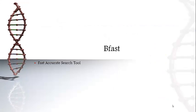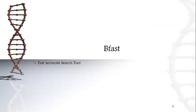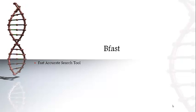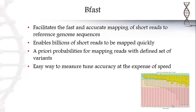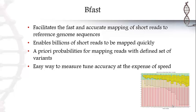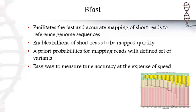Be Fast is one of the fast and accurate search tools researchers use for alignment, just like Bowtie. Be Fast facilitates the fast and accurate mapping of short reads to reference genome sequences. It also enables billions of short reads to be mapped quickly, and it's an easy way to measure and tune accuracy, although you may lose some speed while doing that.